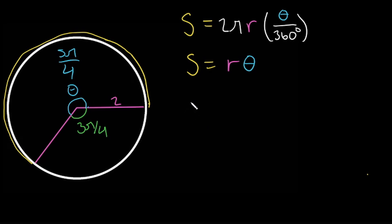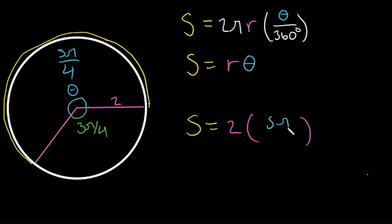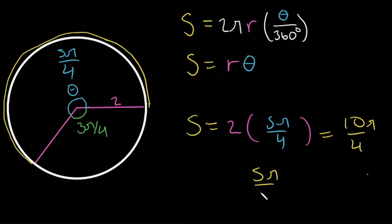Now we can solve for our arc length. s = r times theta. Our r equals 2, and our theta is 5π/4. Two times 5π is 10π, so we have 10π/4. Dividing both by 2 gives us 5π/2. So the length of this arc is 5π/2.